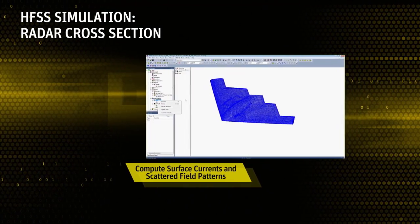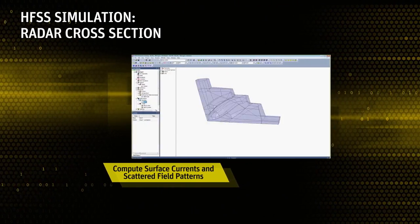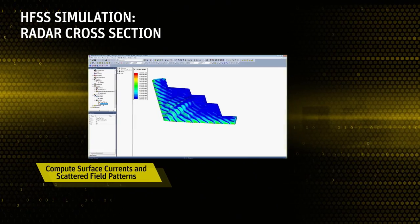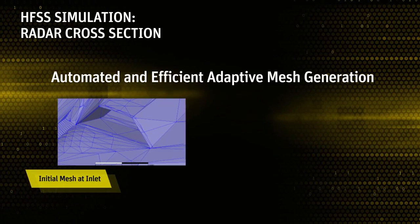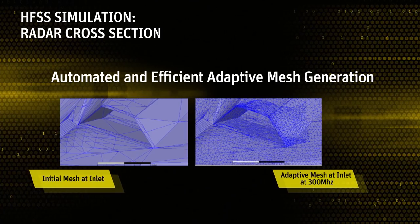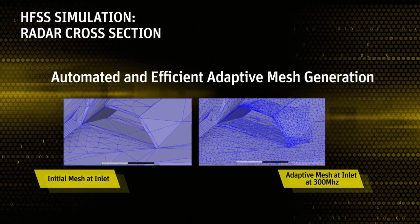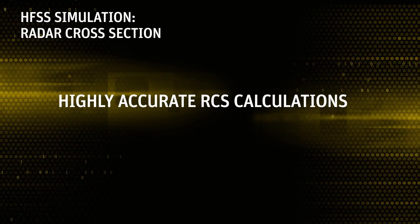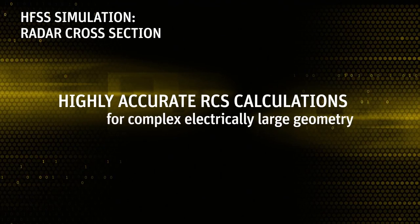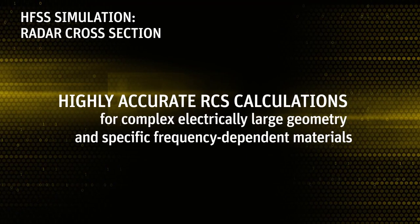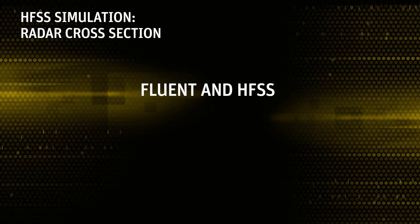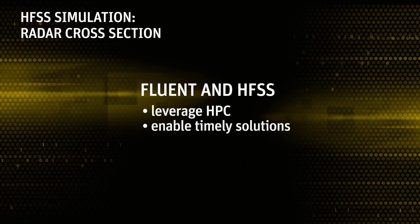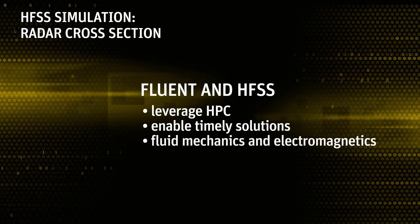HFSS computes and visualizes the surface currents and scattered field patterns that contribute to the vehicle's radar cross-section, with contributions from external and internal components. HFSS accomplishes these tasks with automated meshing, efficient adaptive mesh generation, and integrated post-processing. The result is highly accurate RCS calculations for complex electrically large geometry and specific frequency-dependent materials. Both Fluent and HFSS leverage high-performance computing to enable timely solution of large, real-world problems in both fluid mechanics and electromagnetic domains.